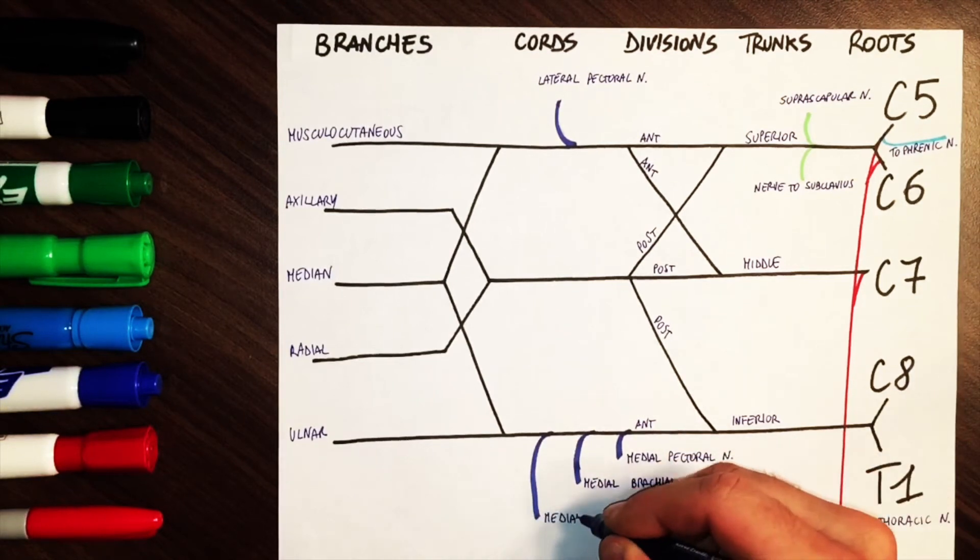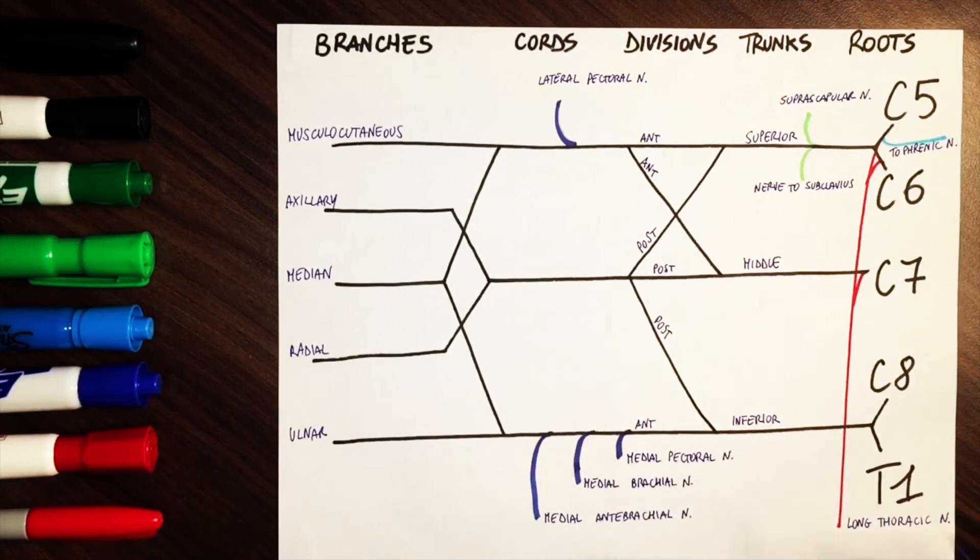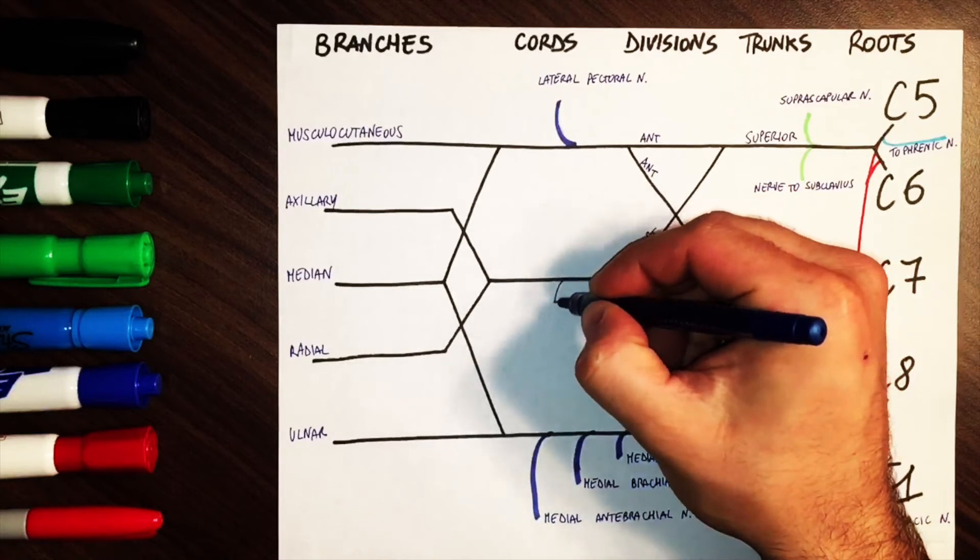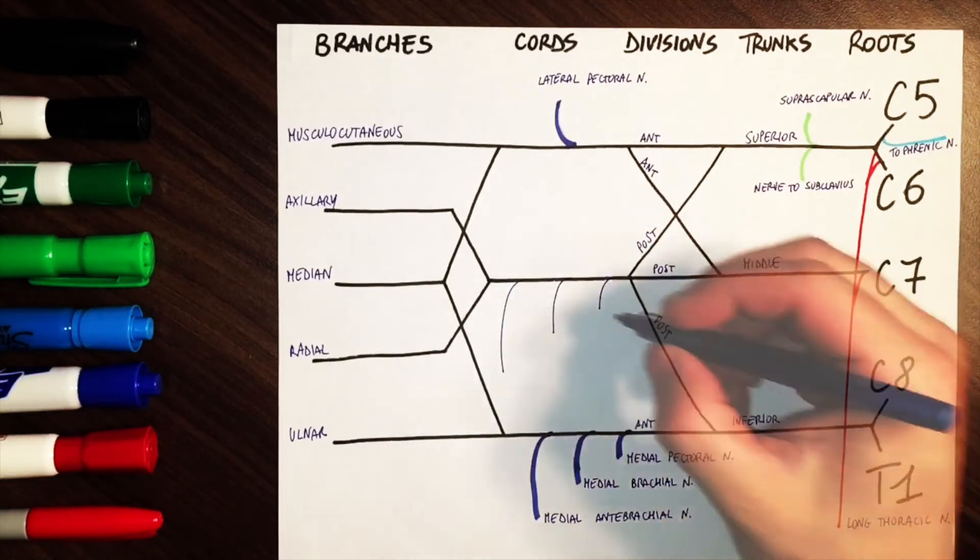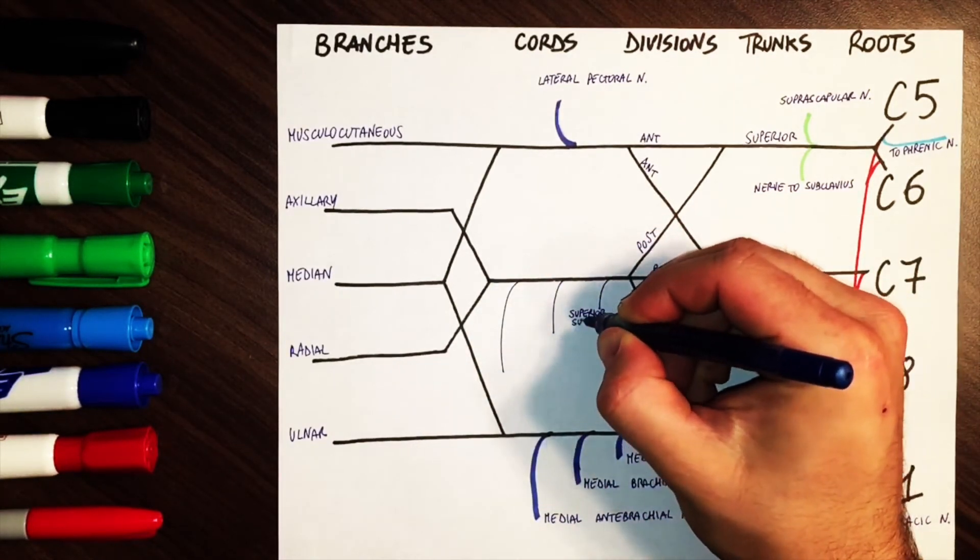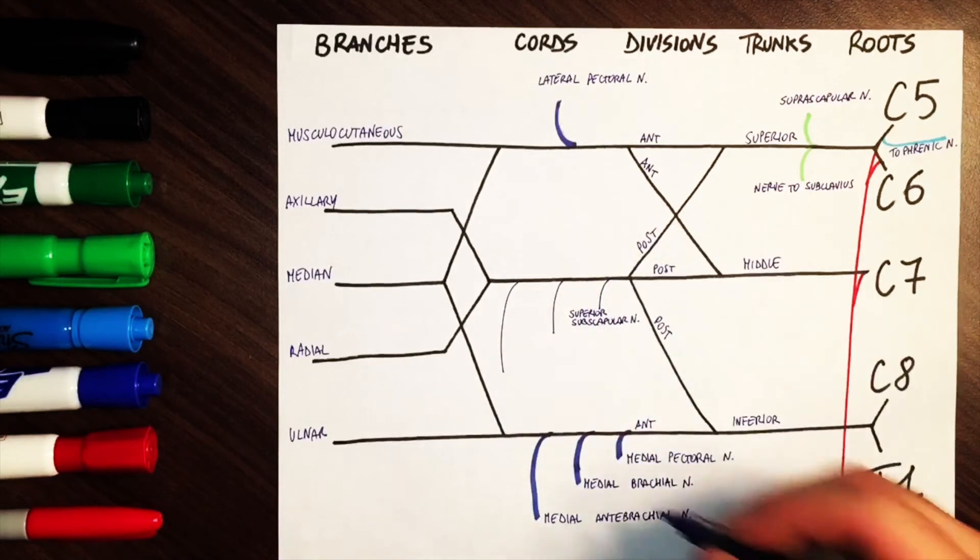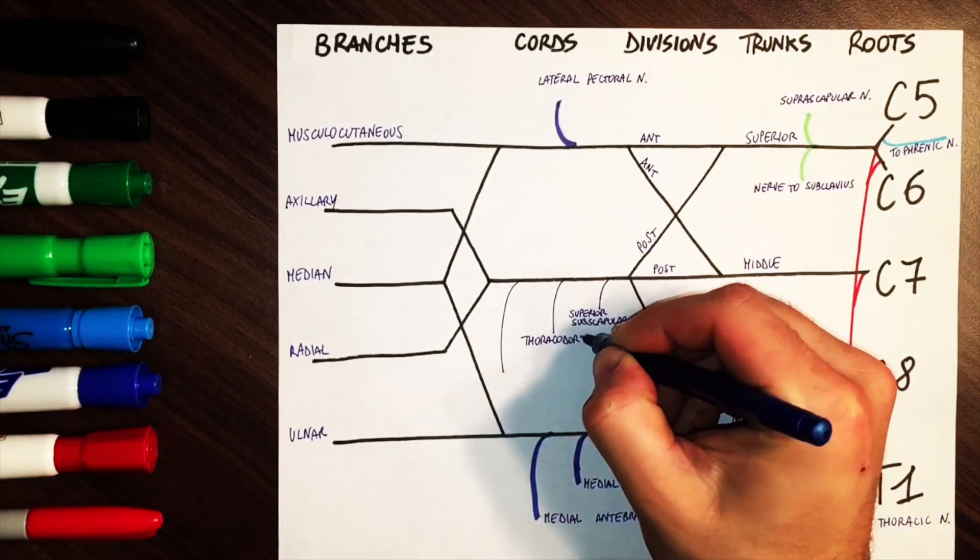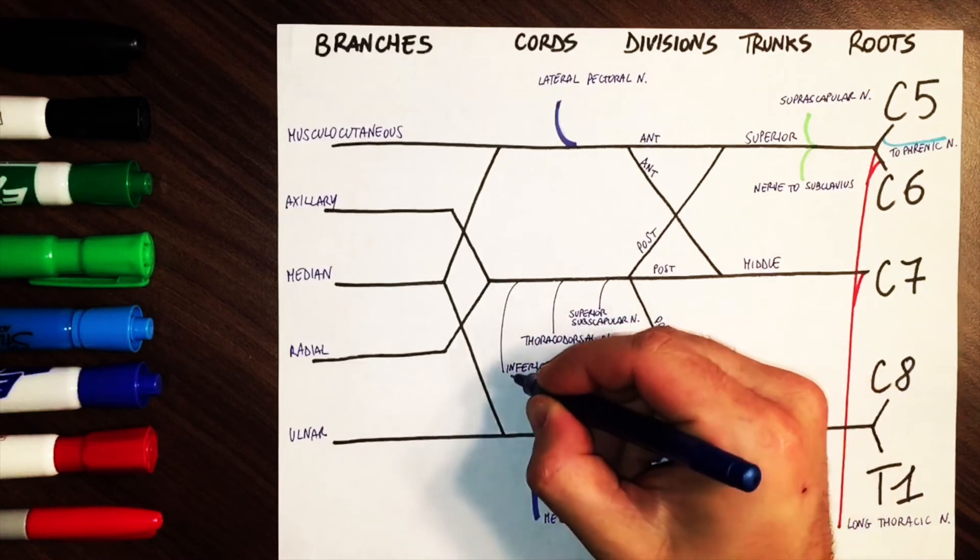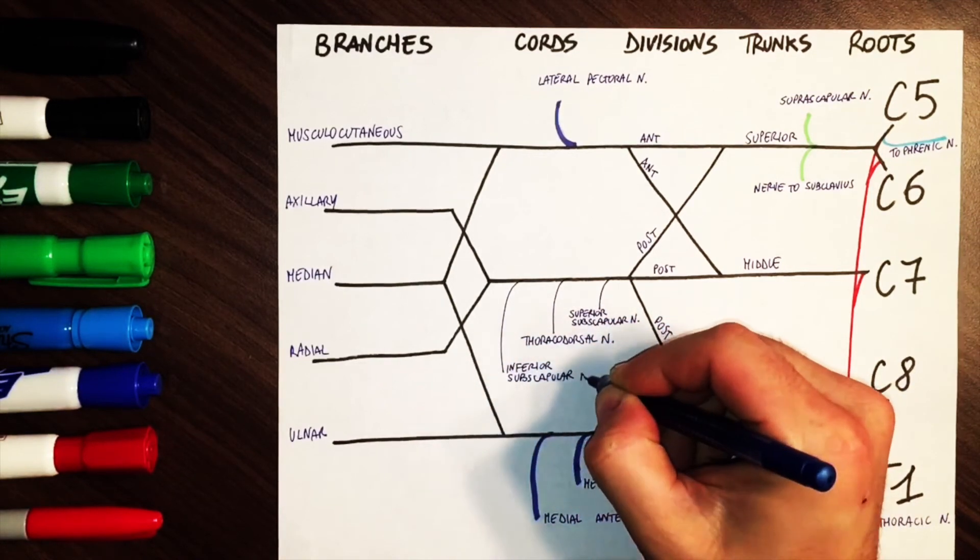The medial antebrachial nerve also comes from this cord. From the posterior cord, right before the fork, you can label the superior subscapular nerve, the middle subscapular nerve (also called thoracodorsal nerve, which innervates the latissimus dorsi muscle), and finally the inferior subscapular nerve.